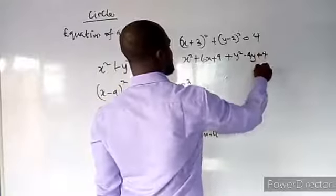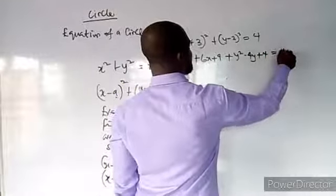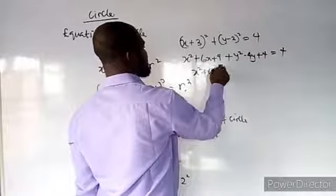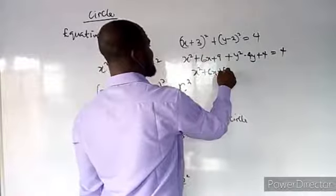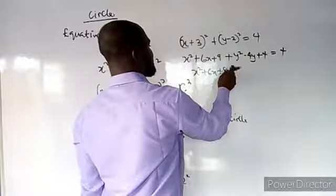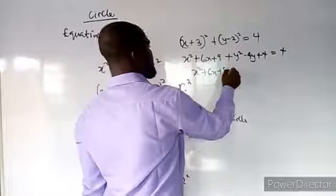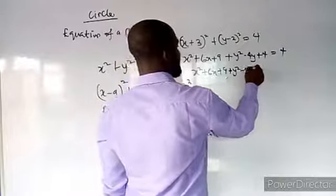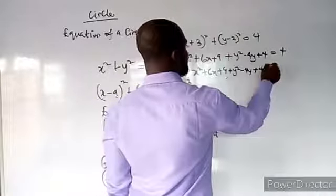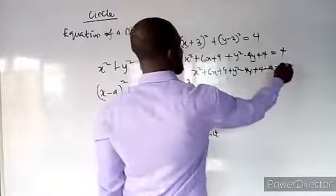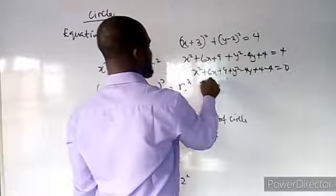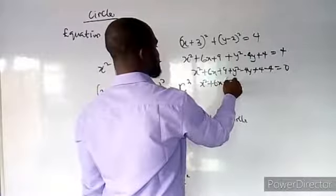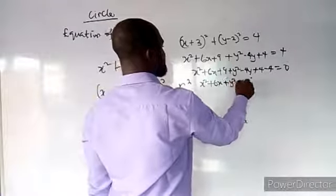Plus 4, that's what you get here, is equal to 4. Then bring this one in: you have x² + 6x + 9 + y² - 4y + 4 - 4. This one will be zero, so x² + 6x + y² - 4y + 9 = 0.